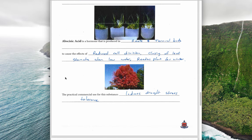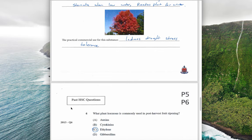Abscisic acid is produced in roots and terminal buds and causes the effects of reduced cell division, closing of leaf stomata when water is low, and readies the plant for winter. The way we can use this commercially is to potentially induce drought stress tolerance and cause plants to become more tolerant of drought.